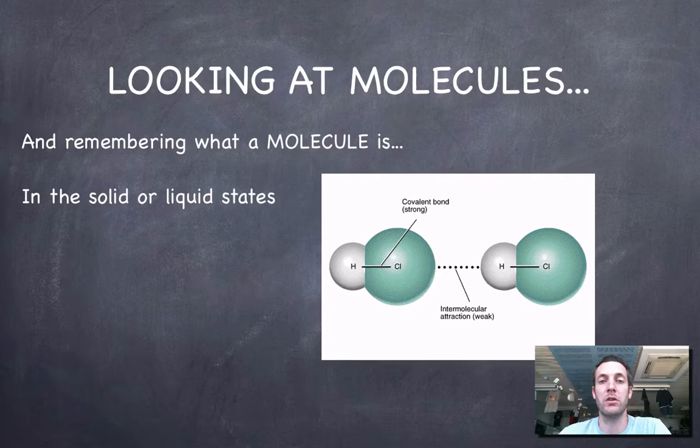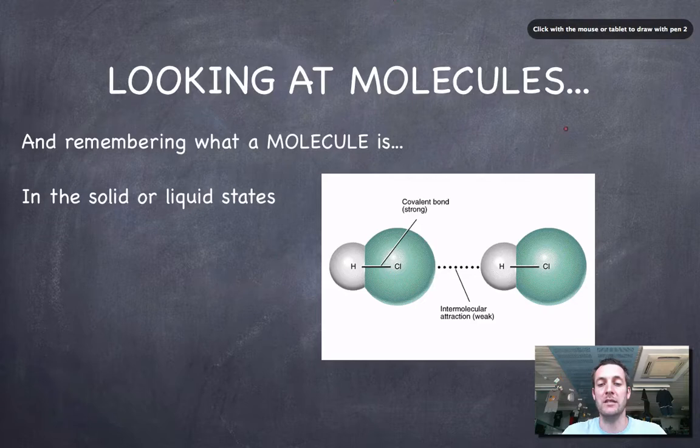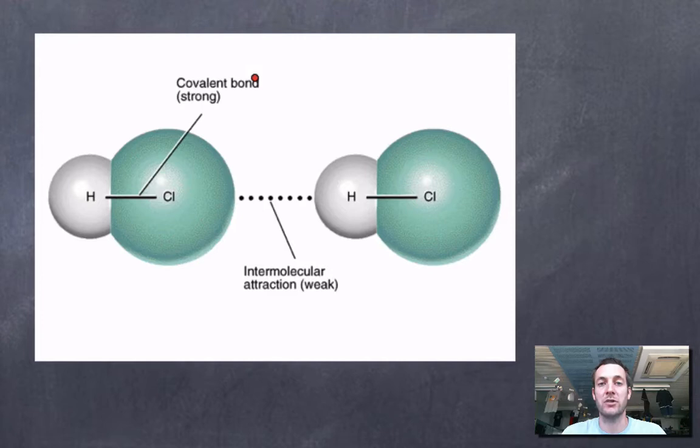It's also important to understand what a covalent bond is. All the bonds we've looked at so far have been electrostatic attractions. In metals there was an electrostatic attraction between ions and electrons. In ionic substances there was an electrostatic attraction between oppositely charged ions. These are no different. In fact, all bonds in chemistry are electrostatic attractions.